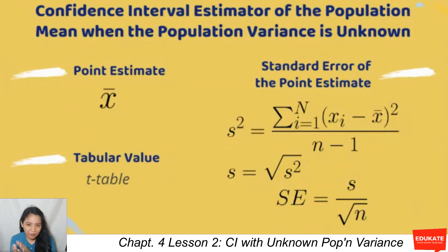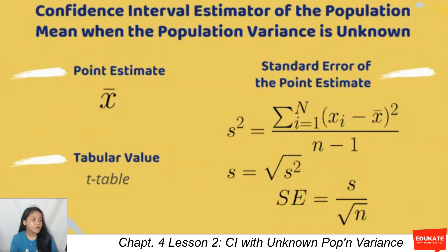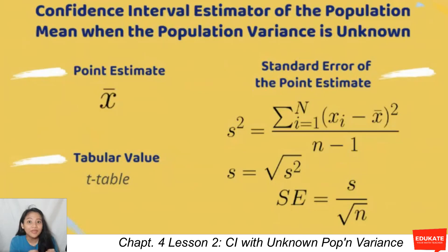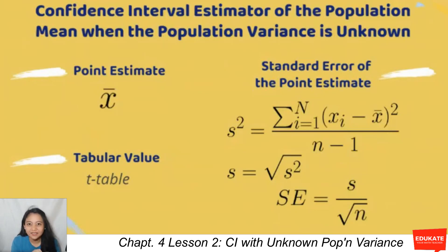The tabular value is now going to be the t-value from the t-table. Your standard error of the point estimate is going to be the standard deviation divided by the square root of n. Now, your population standard deviation is going to be replaced by a point estimator of the population standard deviation.